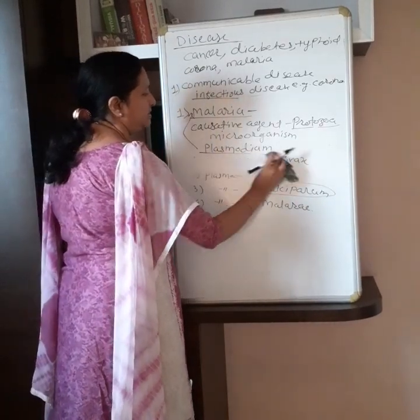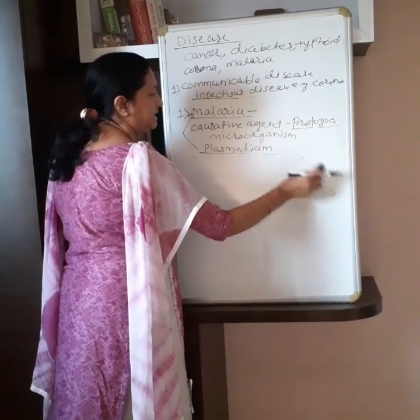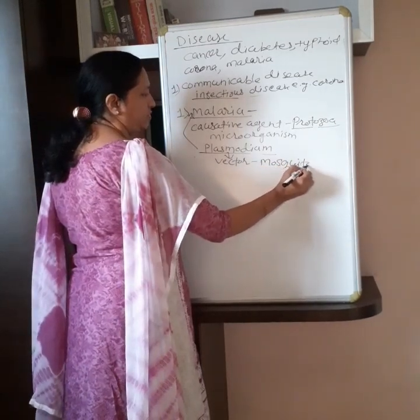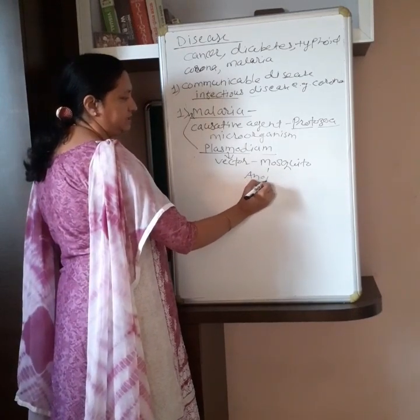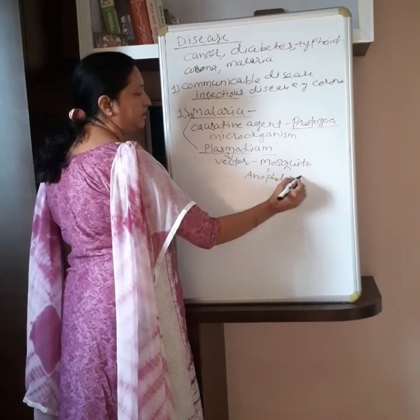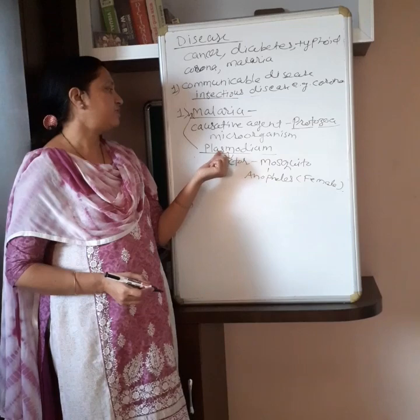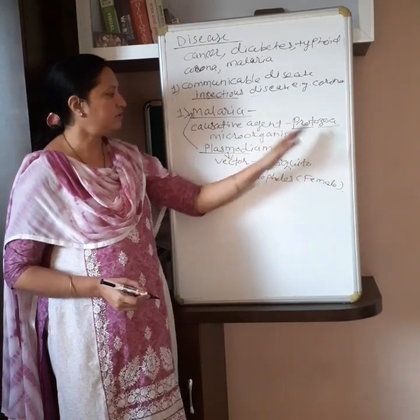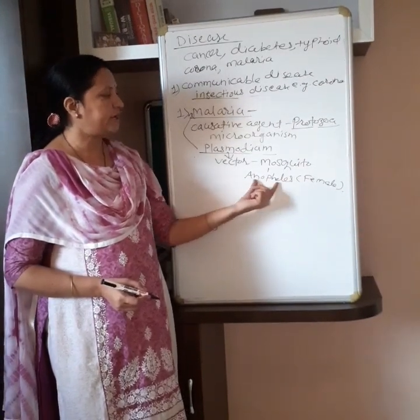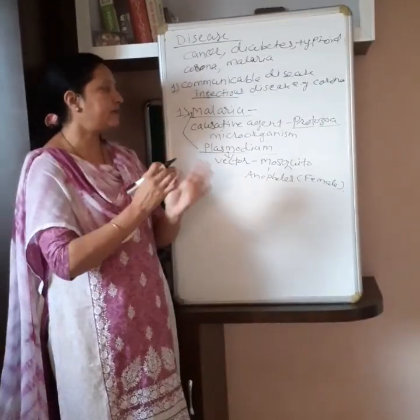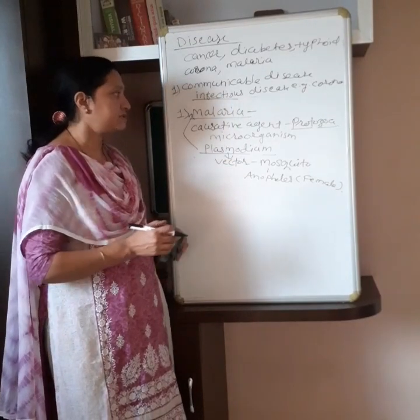Plasmodium does not reach from person to person directly — it needs a vector. Its vector is a living organism which transports the Plasmodium from person to person. This vector is a mosquito, and particularly the species of this mosquito is Anopheles. From Anopheles also, it is only the female. The female Anopheles mosquito acts as a vector — it transports Plasmodium from one infected person to a healthy person. The male Anopheles mosquito feeds upon plant sap; only the female Anopheles sucks blood, making it responsible for transferring Plasmodium.